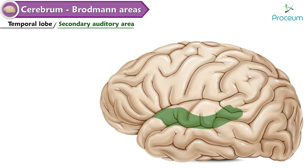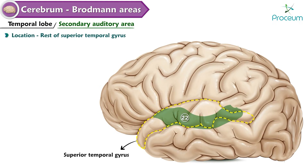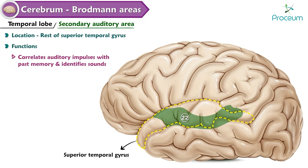Secondary auditory area — Area 22. Location: rest of the superior temporal gyrus. Functions: correlates auditory impulses with past memory and identifies sounds.